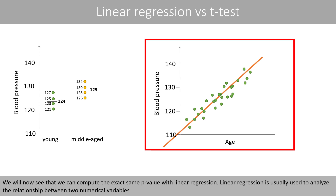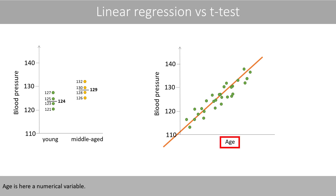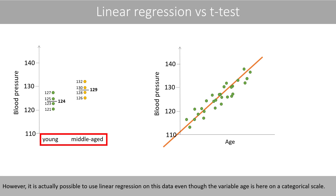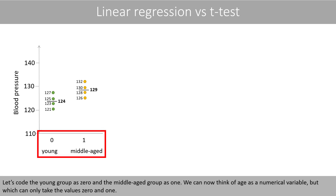We'll now see that we can compute the exact same p-value with linear regression. Linear regression is usually used to analyze the relationship between two numerical variables. Age is here a numerical variable; however, it is actually possible to use linear regression on this data even though the variable age is here on a categorical scale. Let's code the young group as 0 and the middle-aged group as 1. We can now think of age as a numerical variable, but which can only take the values 0 and 1.